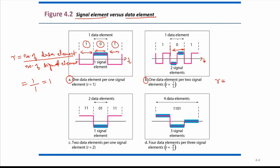In case C, two data elements are sent using one signal element, so R equals two divided by one, giving R equal to two. In case D, over one complete time duration, four bits are being sent and represented by three signal levels. So R equals four divided by three.